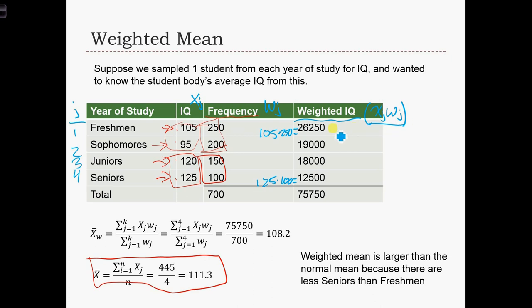So once we've calculated these values, the numerator of the equation simply asks for the sum of those four values, which we put into the fraction over there, 75750. The denominator is asking for the sum of the weights, which is just the sum of these four values. So the sum of those four values is 700. And we put that into the denominator over here. When we calculate the average now, we find that the average IQ of students is 108.2.